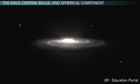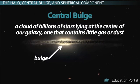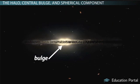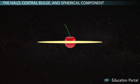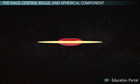Something known as the central bulge is a cloud of billions of stars lying at the center of our galaxy, one that contains little gas or dust. It is called a central bulge for obvious reasons — it bulges out at the center of the galaxy. In reality, the central bulge is more elongated, like a bar, as opposed to being truly spherical.